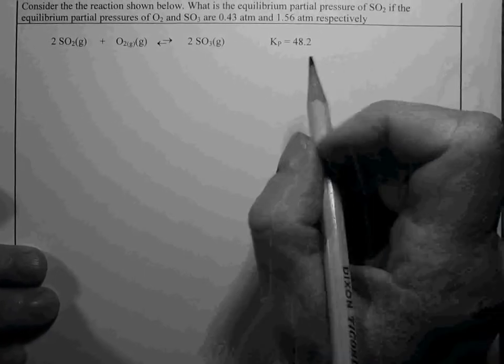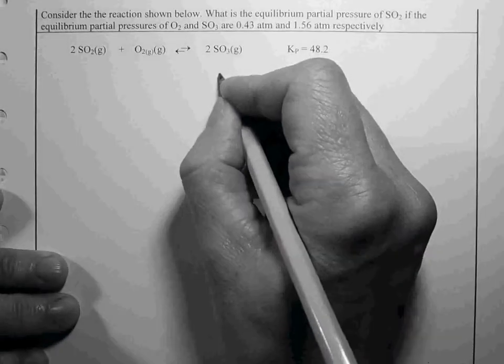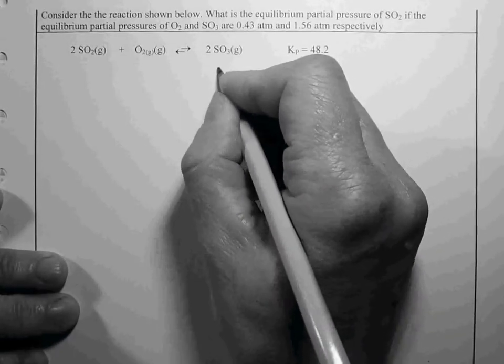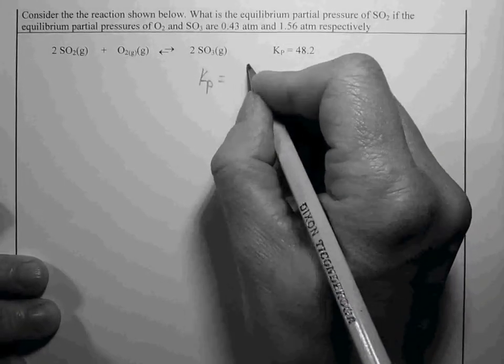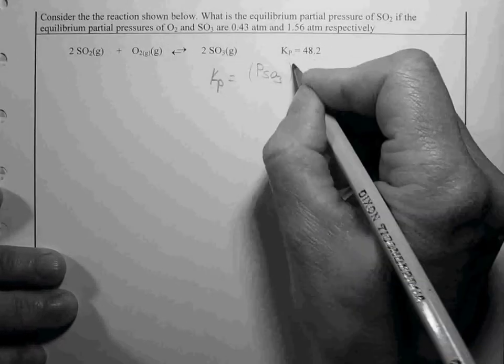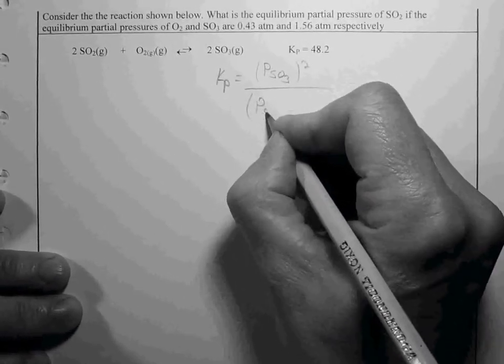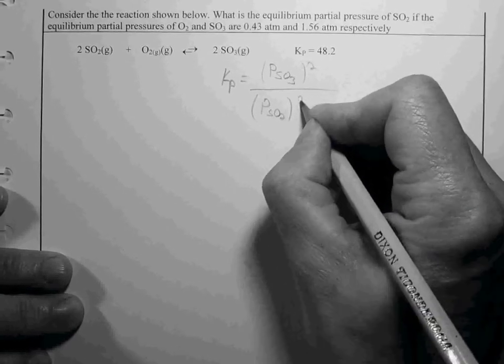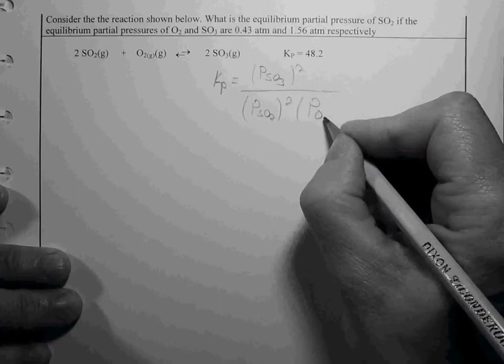We won't need an ICE table since we're given equilibrium amounts. Let's write our expression for Kp: partial pressure of SO3 squared over partial pressure of SO2 squared times the partial pressure of O2.